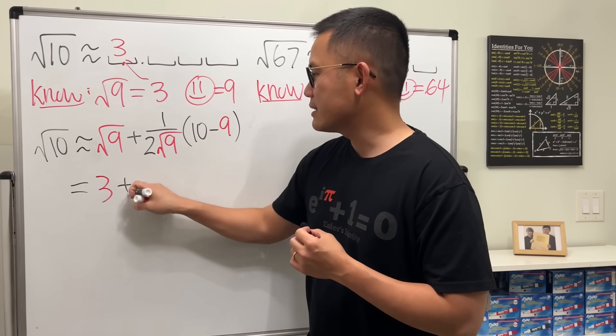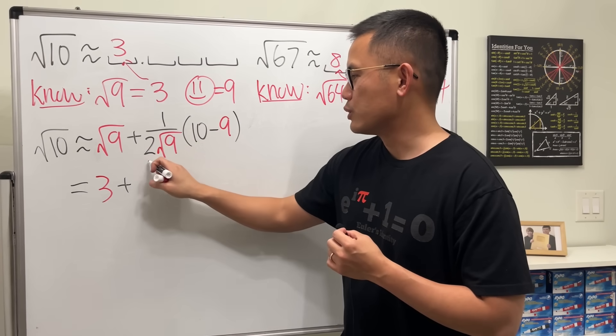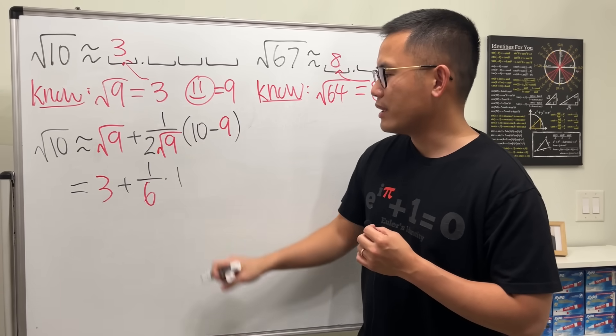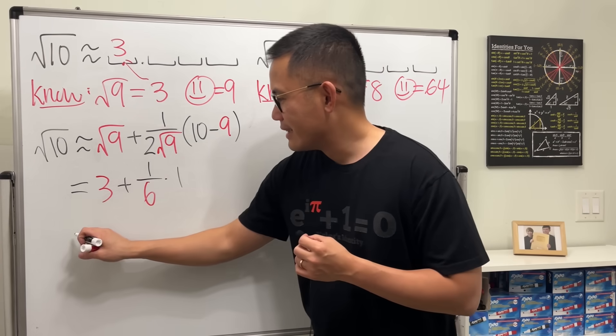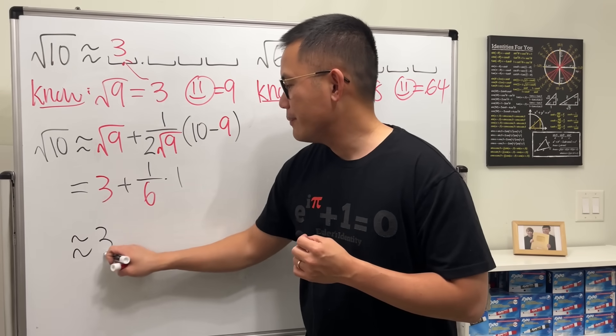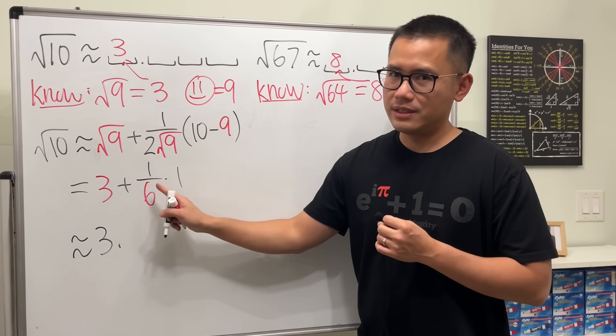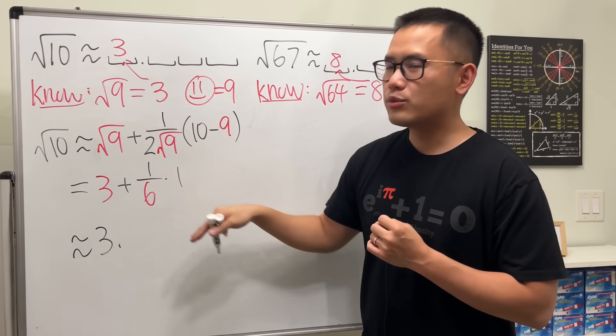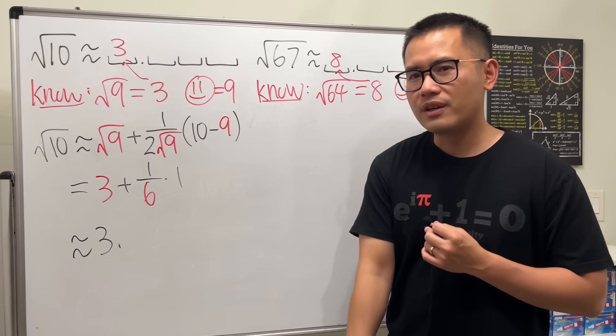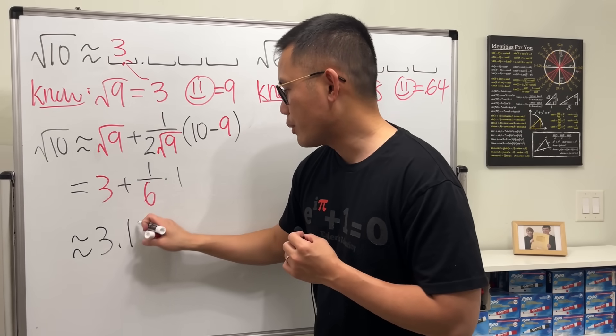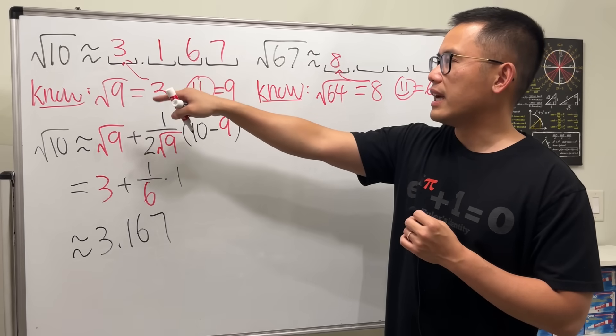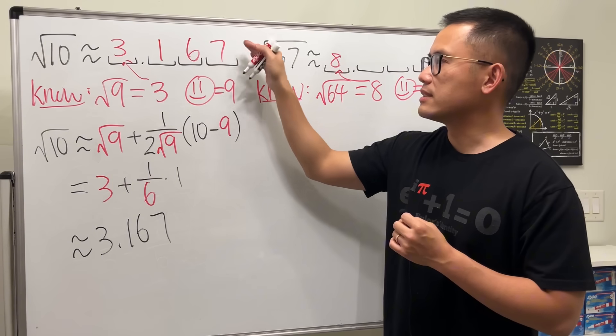Anyways, this right here is just 3, plus 1 over 2 times 3, which is 1 over 6. 10 minus 9 is just 1. Now, this is 3. 1 over 6, it's going to give us the approximations. I will tell you, this right here is about 0.166 forever. So, I'm just going to write it as 0.167. There we have it. Square root of 10 is about 3.167.